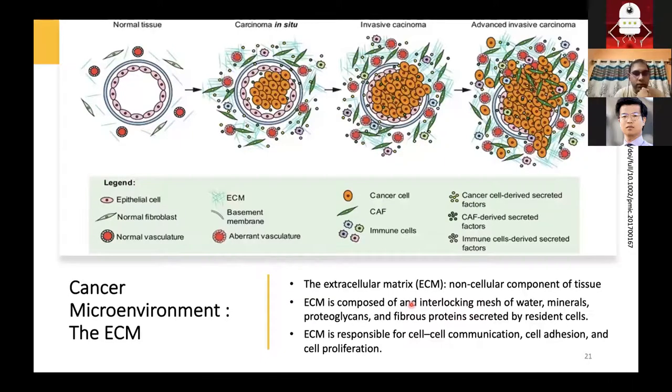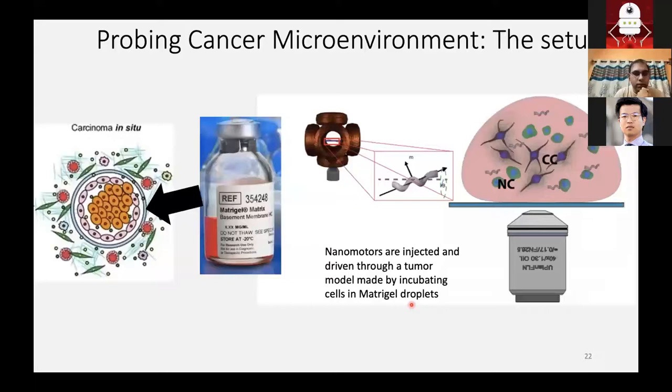ECM is a very interesting fluid, mostly because it's composed of interlocking mesh of a lot of protein, fibrous proteins, minerals and water, and then there are cells embedded in them. To replicate this sort of a cancer model, we came up with our own tumor model. We used matrigel matrix, which is a basement material that is derived from mouse sarcoma. We used a droplet of this matrigel matrix and we seeded it with both cancerous and non-cancerous cells. Once this tumor model was allowed to grow, we incubated them. We injected nanomotors in them and tried to move them.